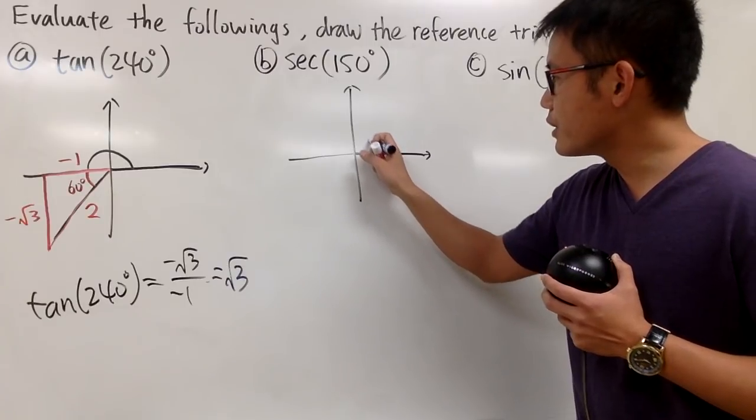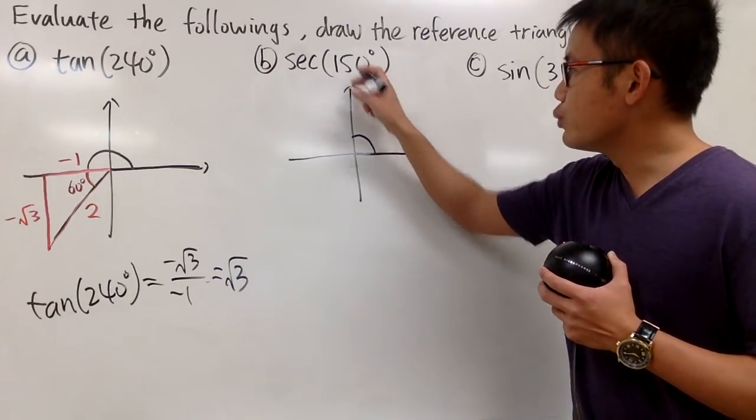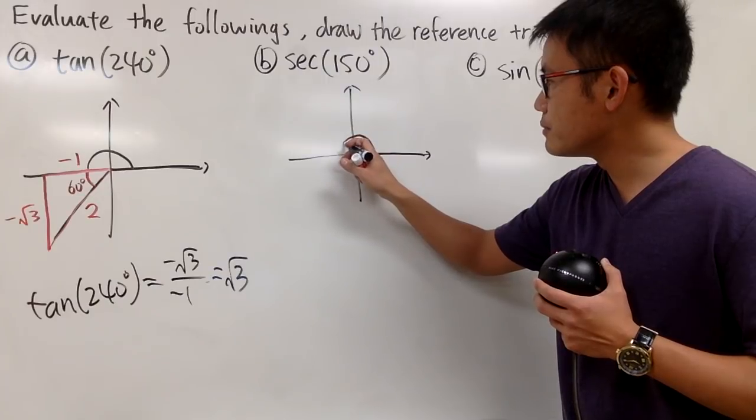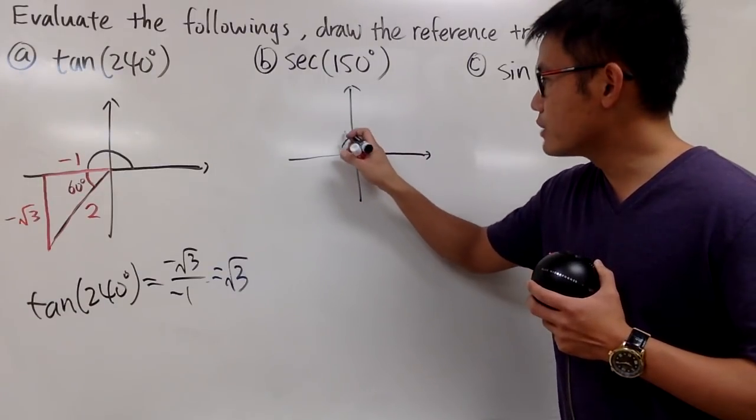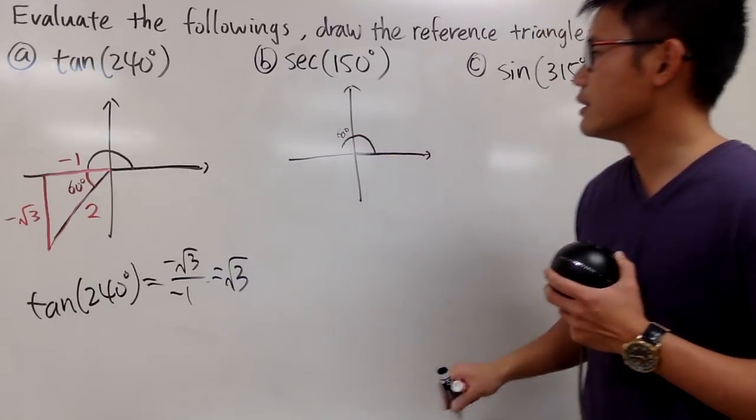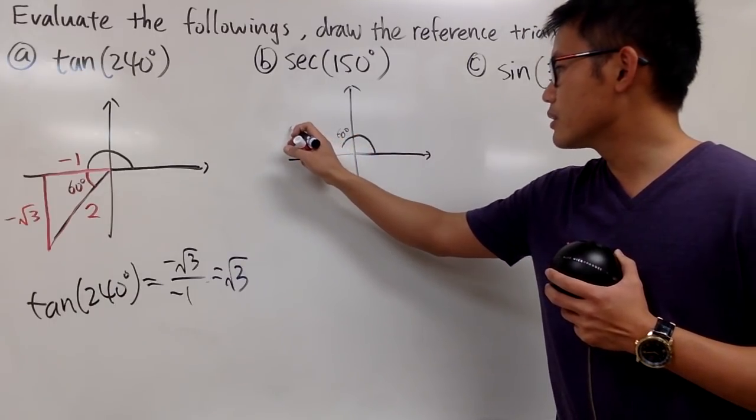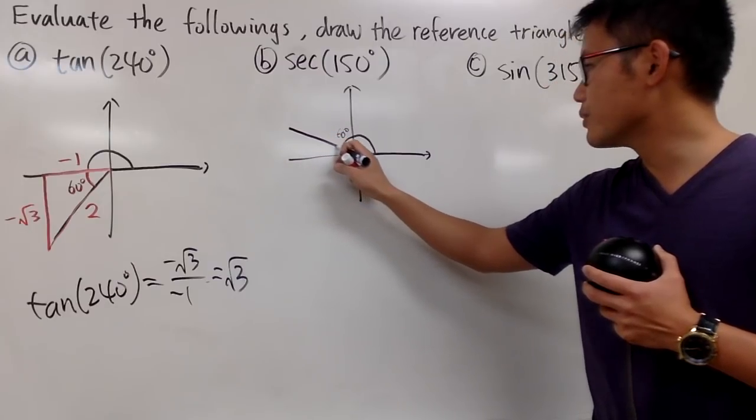From here to here is 90 degrees already. To get to 150, we have to go 60 degrees more, right? So this much is 60 degrees. And here is the terminal side. It's going to look like this.